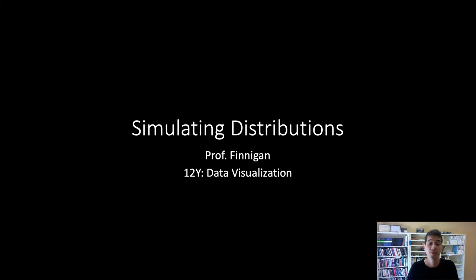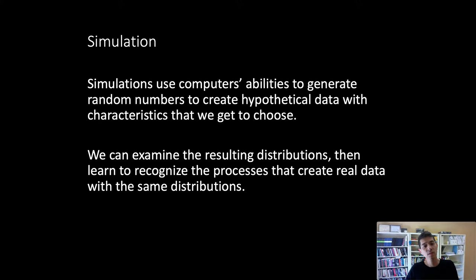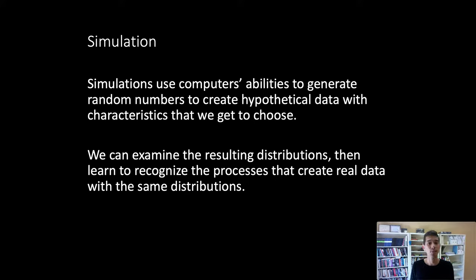Welcome back to data visualization in the social sciences. This short lecture reviews how and why we use computer simulations to look at different kinds of distributions that we might observe in different forms of data. The reason we use a simulation is that a computer lets us generate random numbers and create hypothetical data with characteristics that we choose. Whenever we examine real data collected in the world, we're often working backwards — we have data that resulted from some process and we're trying to examine what that process might have been.